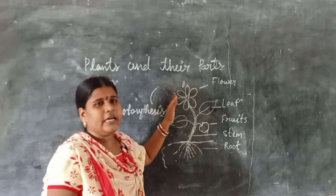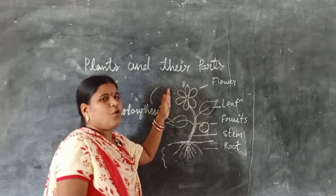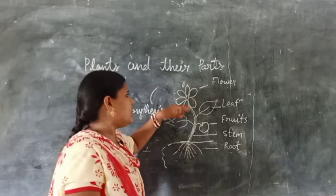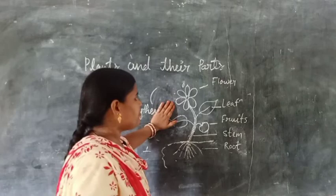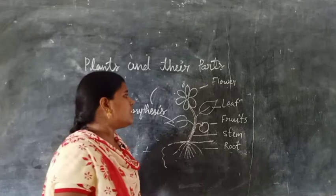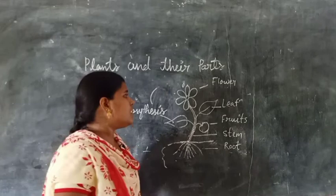Now let us know about flowers. Flowers are a very attractive part of the plant — they look very beautiful. All plants have different types of flowers, just as they have different leaves, roots, and stems. We generally use flowers in our festivals, in puja, or to decorate our homes. Honey bees also get honey from these flowers.